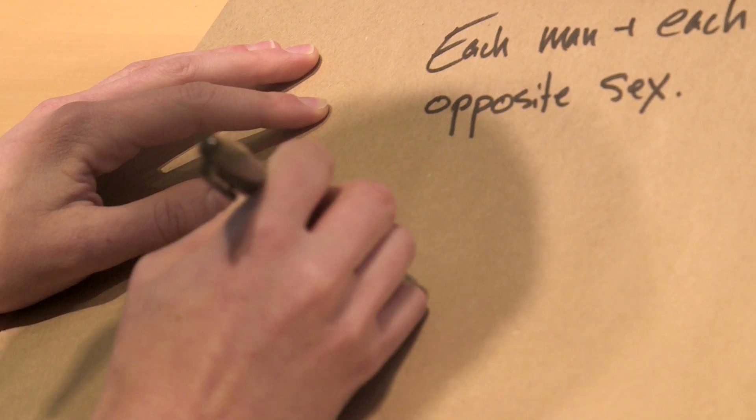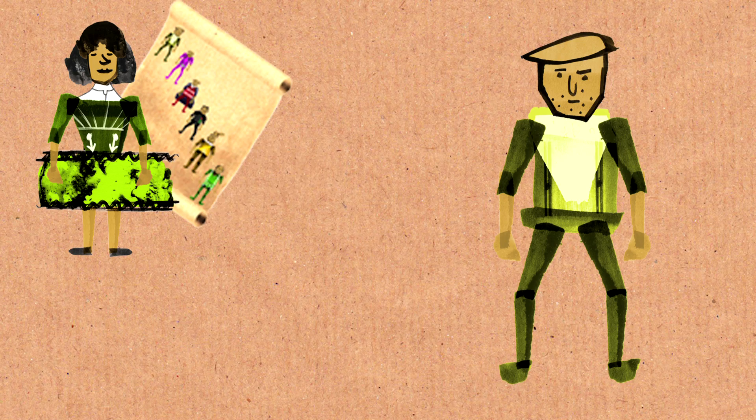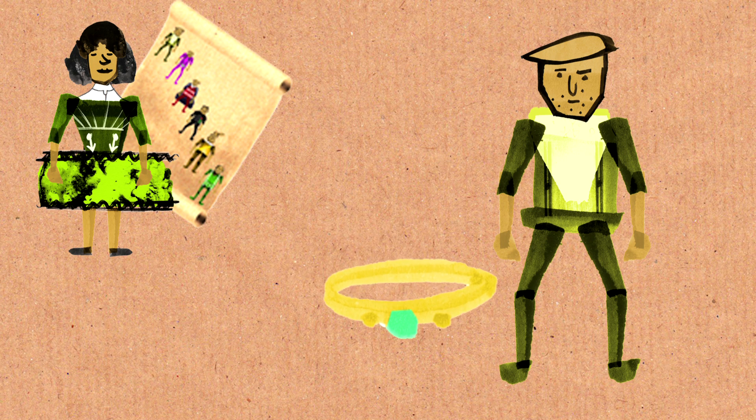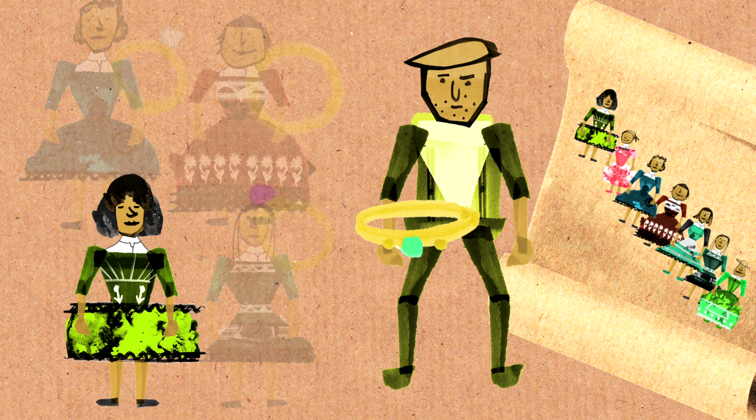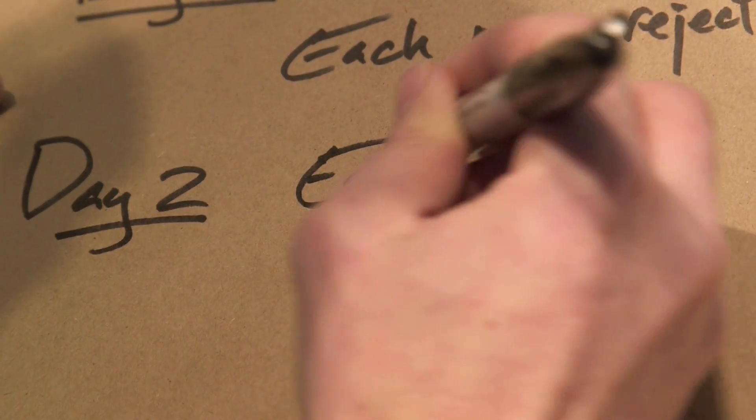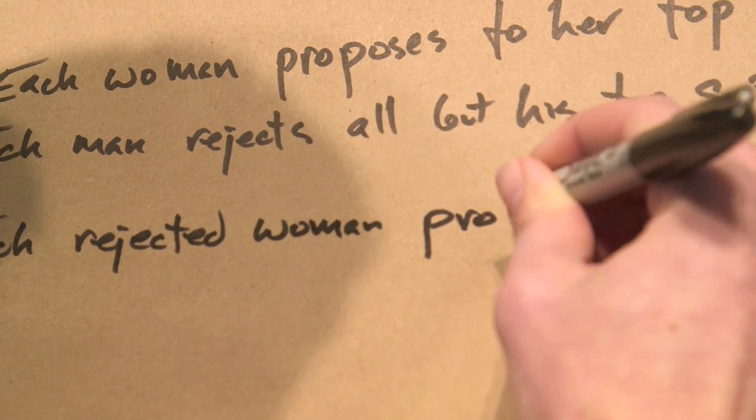Before we begin, each man and each woman rank the members of the opposite sex — everybody submits a preference list from one through however many, of who they'd like to be married to. On the first day of the algorithm, each woman proposes to her number one choice. Some men will receive multiple proposals, others will receive none. The ones with multiple proposals make rejections: each man rejects all but his top suitor. At the end of this step we have tentative engagements — women whose proposals weren't rejected are tentatively engaged.